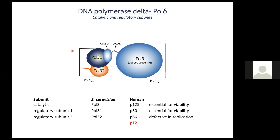The C-terminus of Pol3 harbors two small cysteine-rich domains, CisAD and CisBD, of which CisBD is required for interaction with the other subunits. The two smaller subunits are Pol31 and Pol32. These lack enzymatic activity but are required for protein-protein interactions, and are called the regulatory subunits. Genetic experiments have shown that both Pol3 and Pol31 are essential for viability, while Pol32 is not essential but mutations in it lead to defects in genome synthesis and repair.